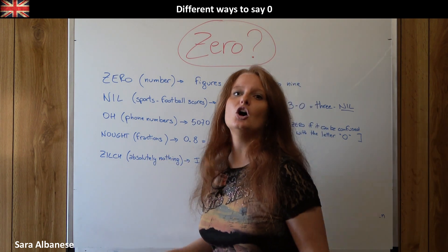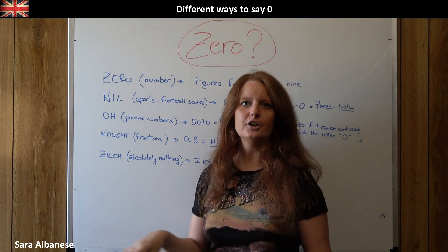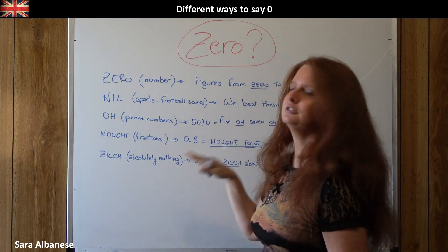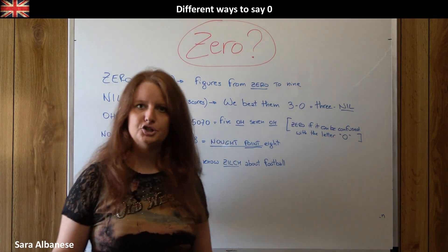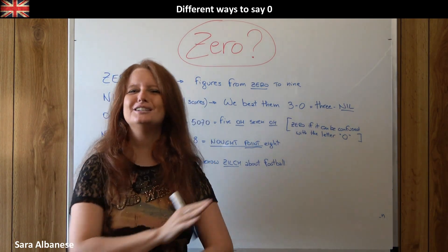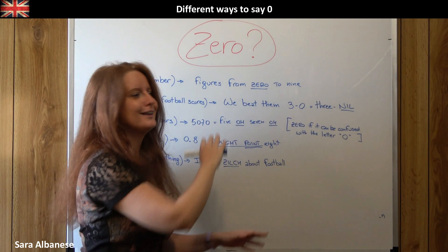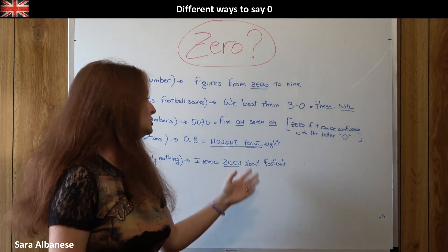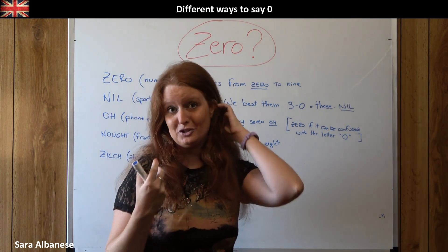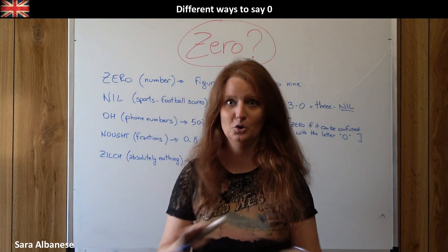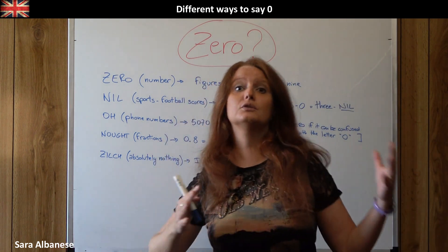Last but not least, this one is used a lot especially in colloquial English, and it's 'zilch'. Zilch means nothing — nothing at all, absolutely nothing. For example: 'I know zilch about football' means I know absolutely nothing, I have no clue. You've just told me a score using the word 'nil', and my answer could be 'I'm sorry but I know zilch about football'. It's quite strong because it means nothing whatsoever.